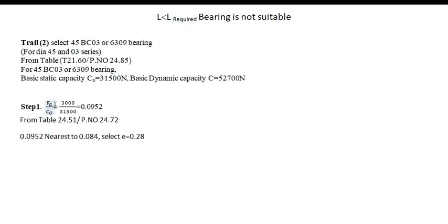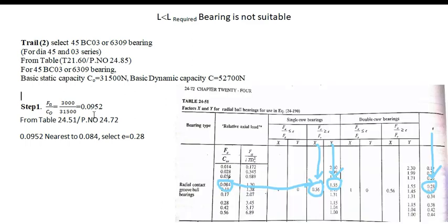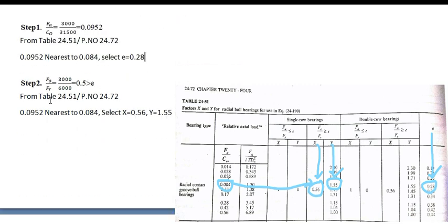Step 1, repeat the step FA by FC0 and refer the table. In the table, the obtained value should be nearest to 0.08. Nearest value you have to select and the E will be 0.28.